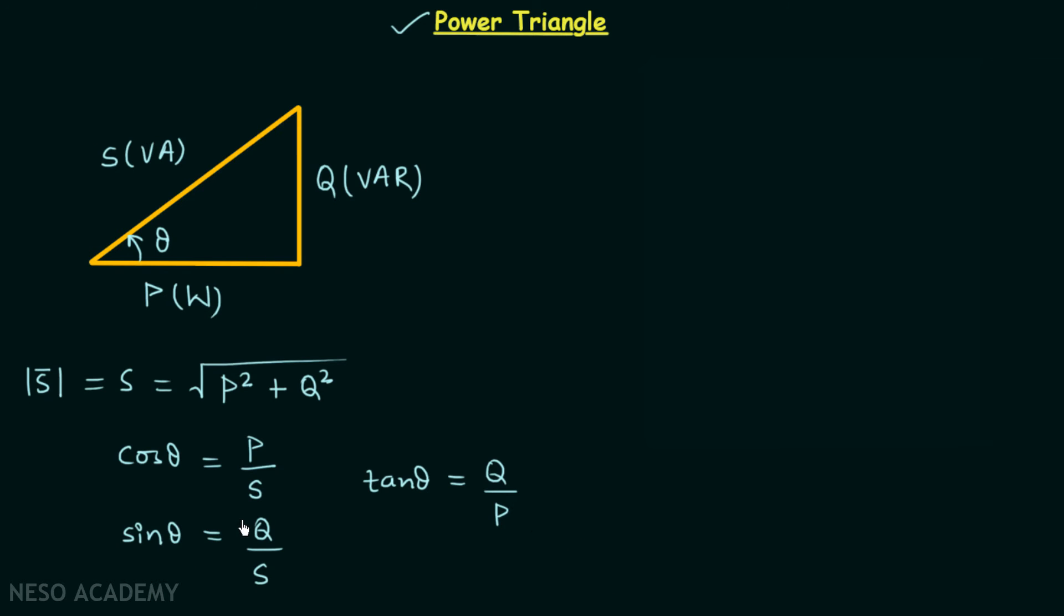So using all these we can have the remaining two quantities when we have two quantities given. Similar to this triangle we have impedance triangle as well and we will see the use of power triangle and impedance triangle in different circuit combinations in the coming lectures. Now moving on to the next point.